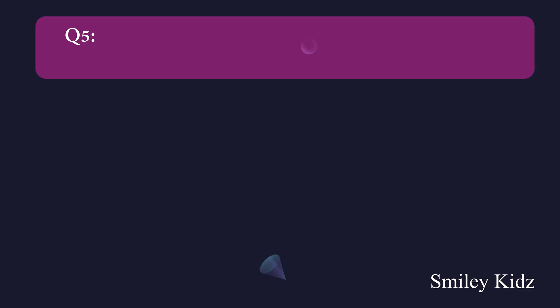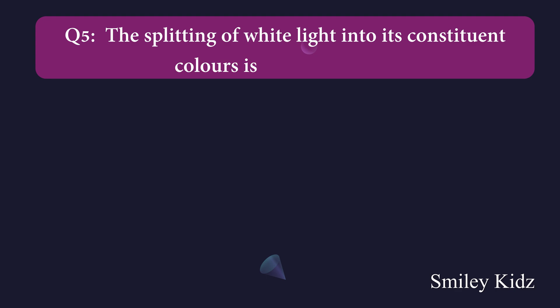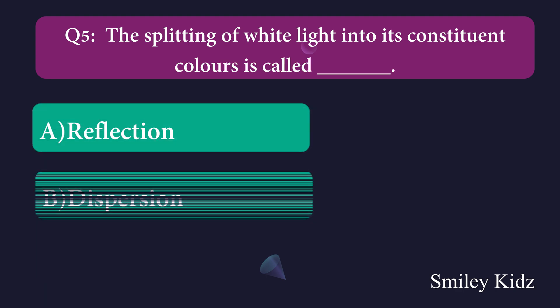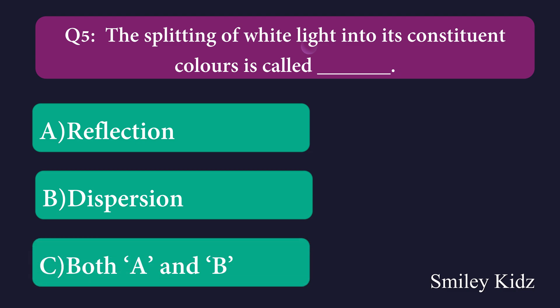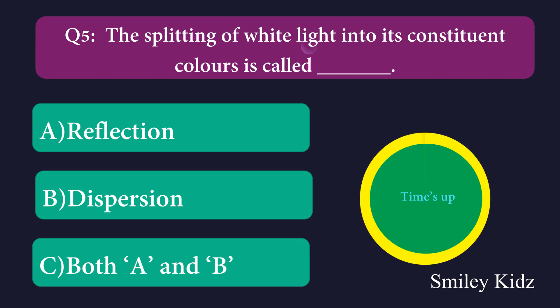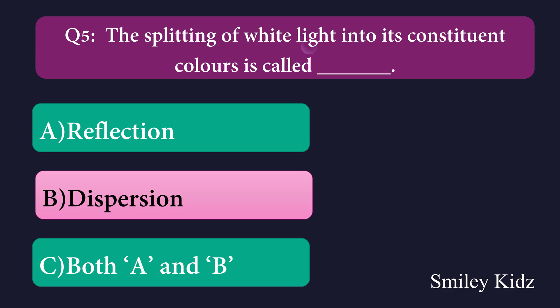Question number five: The splitting of white light into its constituent colors is called dash. Option A: reflection, Option B: dispersion, Option C: both A and B. The right answer is dispersion. The splitting of white light into its constituent colors is called dispersion.